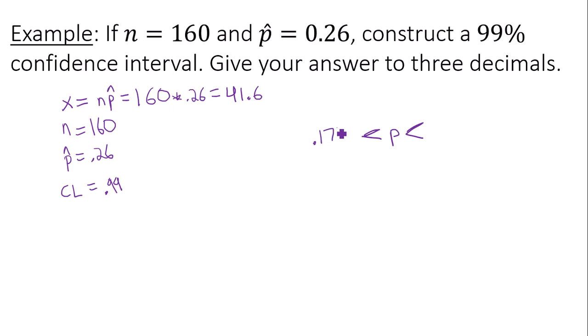So 0.171, 0.349. So what this is telling me is that the true population proportion will be somewhere between 0.171 and 0.349.